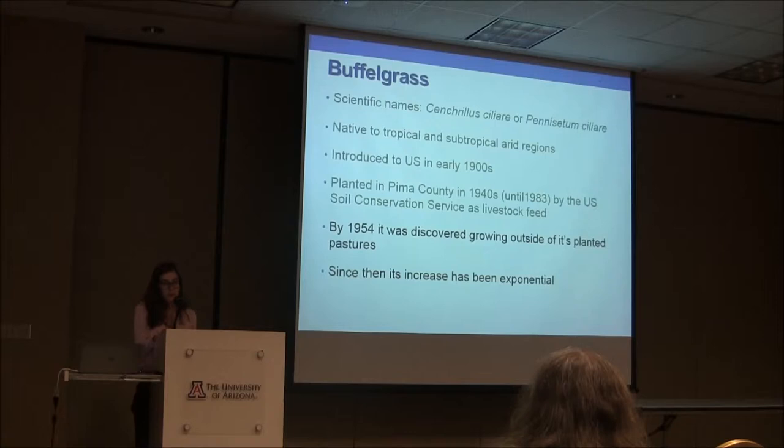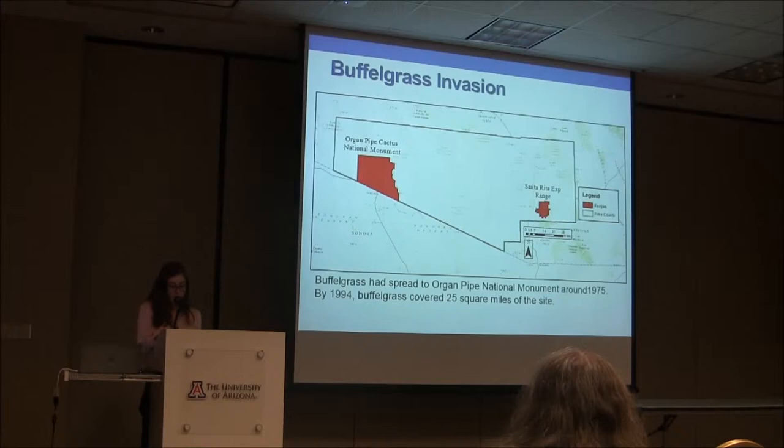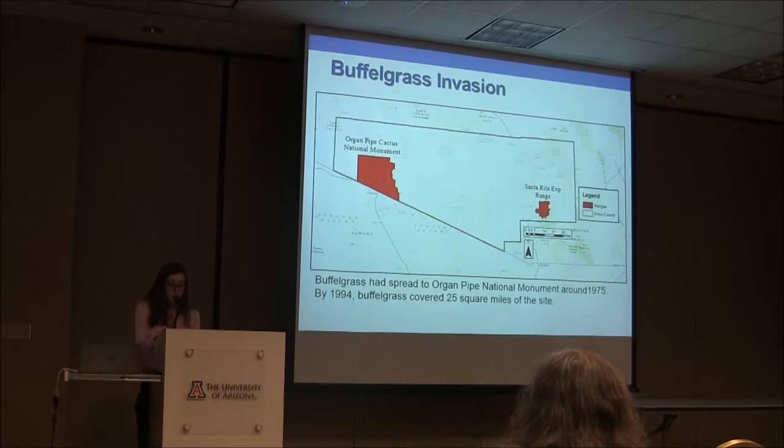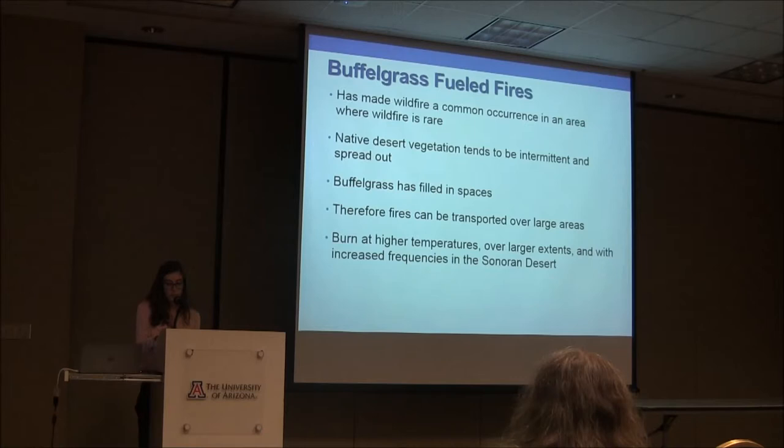By 1954, buffelgrass was found growing outside of its native experimental range. Since then, buffelgrass has been growing exponentially throughout Pima County. By about 1975, it had spread 100 miles west to the Organ Pipe National Cactus Monument, and by 1994 it covered over 25 square miles of the park.